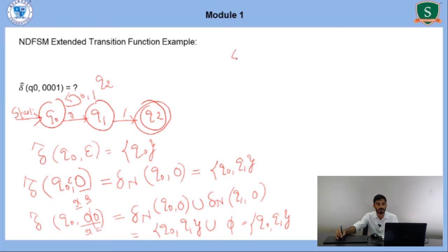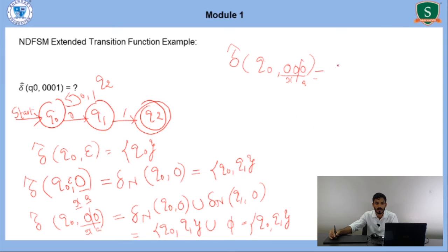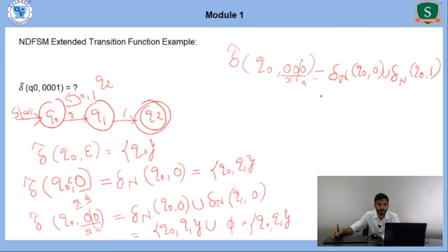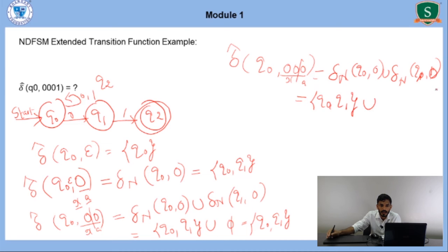Next, δ-cap(Q0, 000). Again treat as X·a where X = 00. We already have δ-cap(Q0, 00) = {Q0, Q1}. So we compute δ(Q0, 0) union δ(Q1, 0), which is {Q0, Q1} union null. The answer is again {Q0, Q1}.